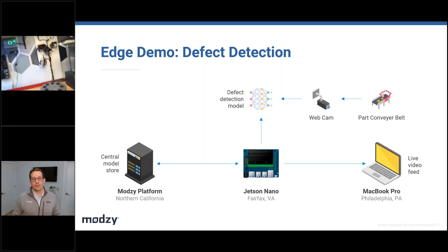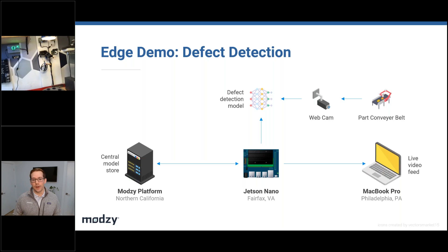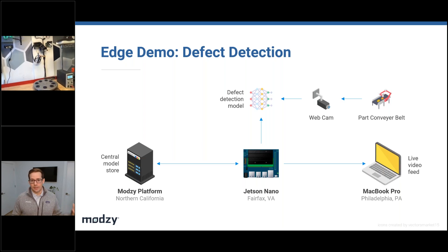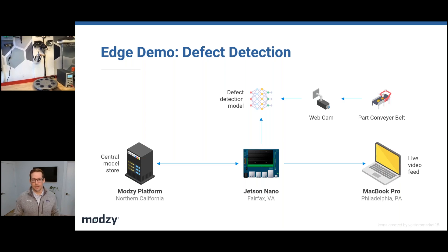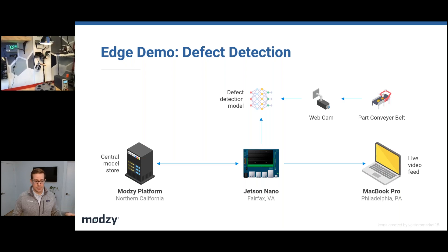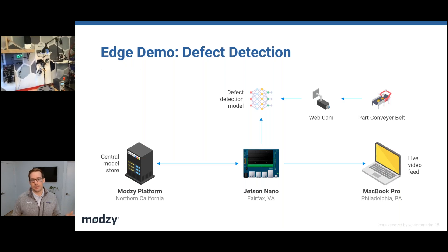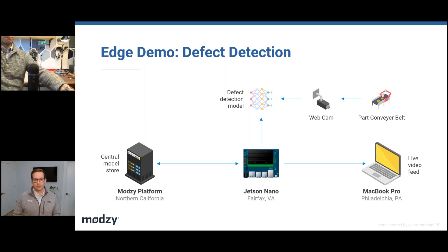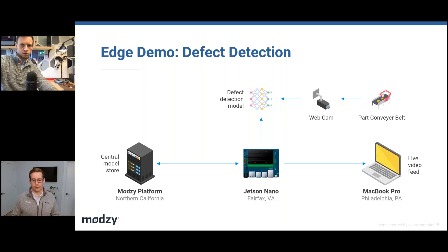We trained a custom YOLO5 detection model. We followed the same process demonstrated earlier — containerized it with Chassis and deployed it to our central Model Ops platform. Mozzie is being hosted in the AWS West region in Northern California.